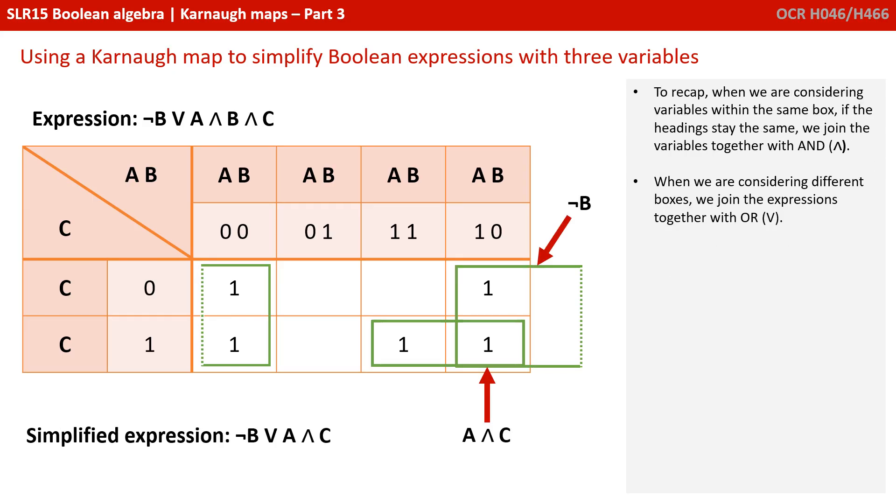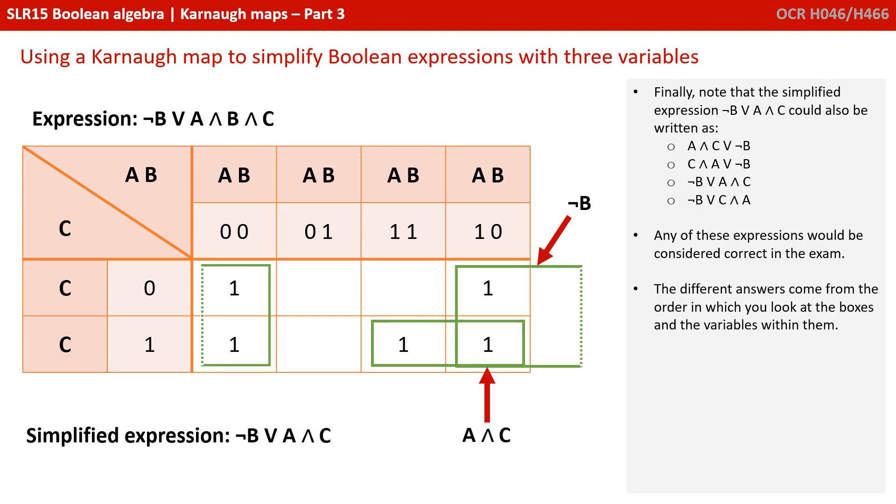To recap, when we consider variables within the same box, if the heading stays the same, we join the variables together with AND. When we're considering different boxes, we join the expressions together with OR. Finally, note that the simplified expression could also be written in a number of other ways, as shown here. Any of these expressions would be considered correct in the exam. The different answers come from the order in which you look at the boxes and the variables within them.